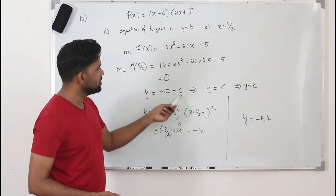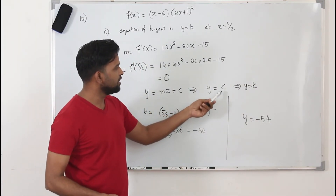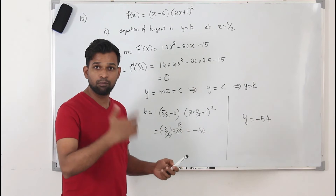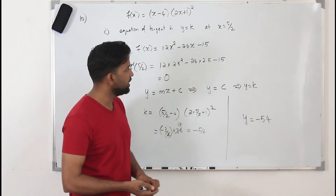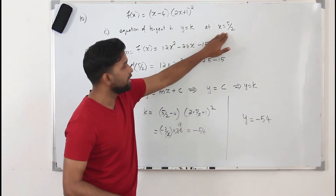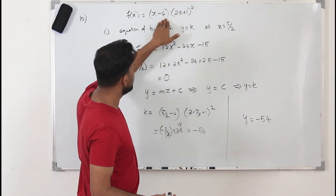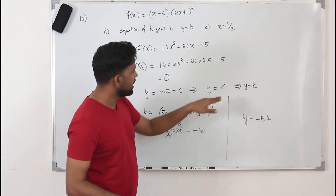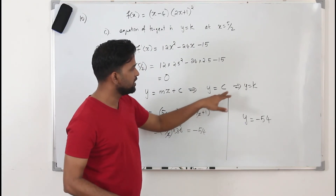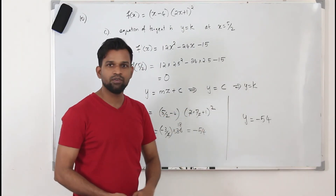Usually, to find c we substitute the x and y coordinates of the point. Our x coordinate is given as 5/2; substitute it into f of x to get the y coordinate. Then plug everything into the tangent equation. The value of c is minus 54.